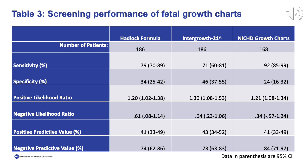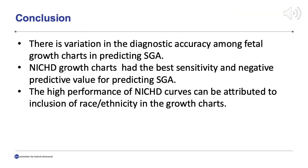When the Hadlock formula is compared to the NICHD and Intergrowth 21st growth charts, the NICHD growth chart has the highest sensitivity at 92% and also the highest negative predictive value at 84%. The Intergrowth 21st chart has the highest specificity at 46%. There is variation in the diagnostic accuracy among fetal growth charts in predicting small for gestational age. The NICHD growth chart has the best sensitivity and negative predictive value, and its high performance can be attributed to the inclusion of race and ethnicity in its calculation. This chart may better represent a diverse patient population in clinical settings. Ultimately, further study is warranted to determine the impact on clinical practice based on this finding.